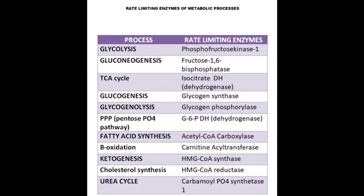TCA cycle: isocitrate dehydrogenase. Glycogenesis: glycogen synthase. Glycogenolysis: glycogen phosphorylase. PPP: glucose-6-phosphate dehydrogenase.